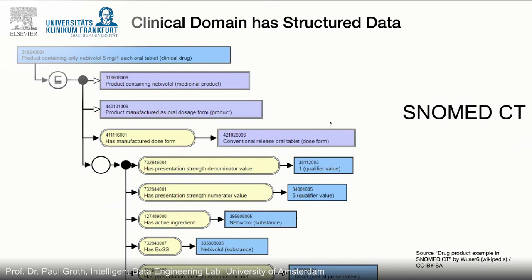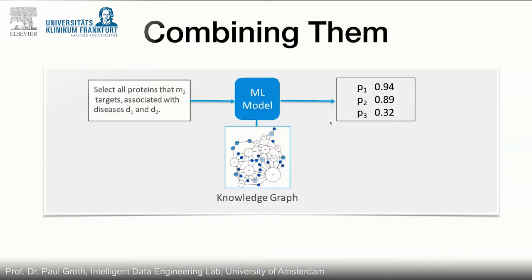Clinical knowledge isn't just textual knowledge. It's not just the notes or the scientific publications — it's also structured data coming from patient records or from large-scale ontologies like SNOMED CT. So an interesting question is: how can you integrate this clinical knowledge — this clinical text — with this kind of structured clinical knowledge to build these machine learning models? And so this is some of the work we're working on now: how can we combine these large-scale pieces of background knowledge like SNOMED CT with text?